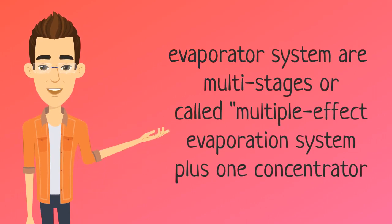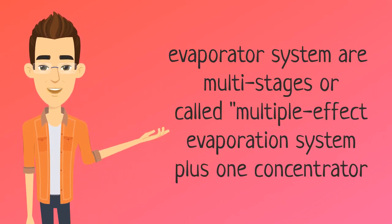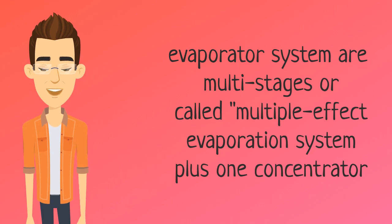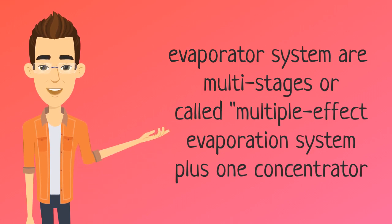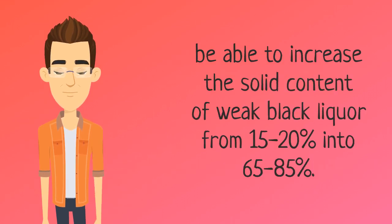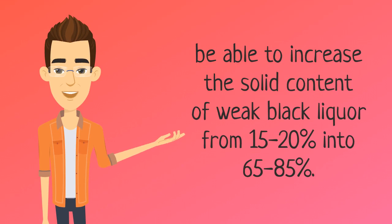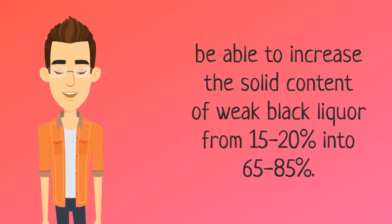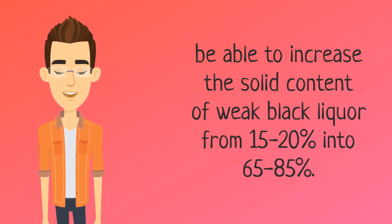The evaporator system is a multi-stage system, also called a multiple effect evaporation system, plus one concentrator. It increases the solid content of weak black liquor from 15 to 20 percent up to 65 to 85 percent.